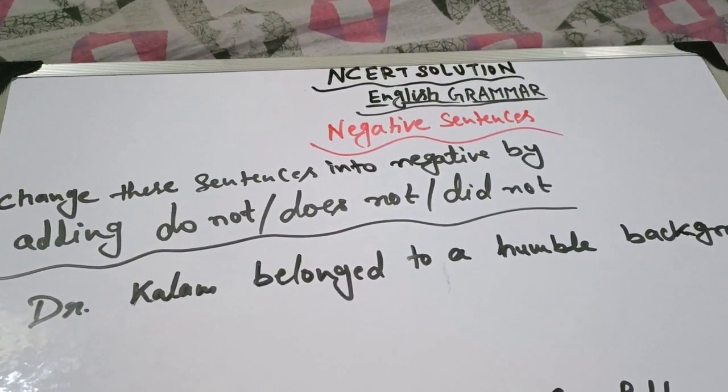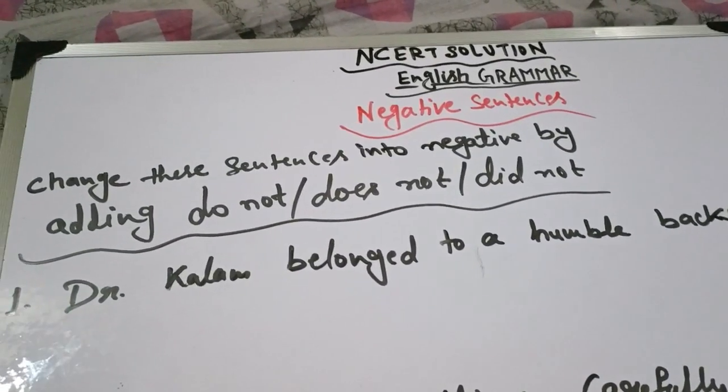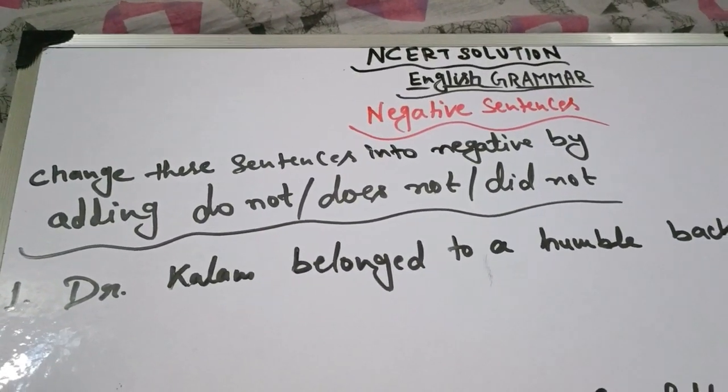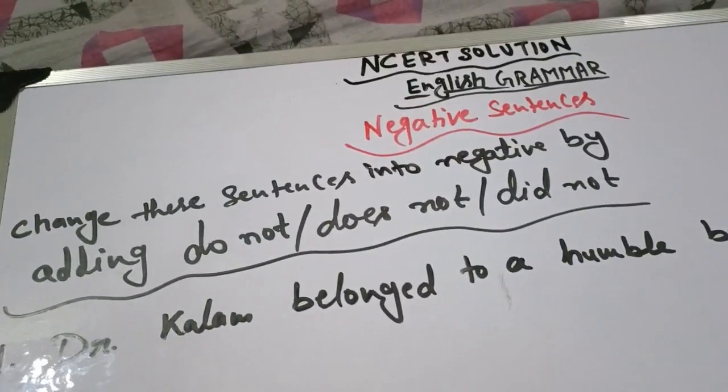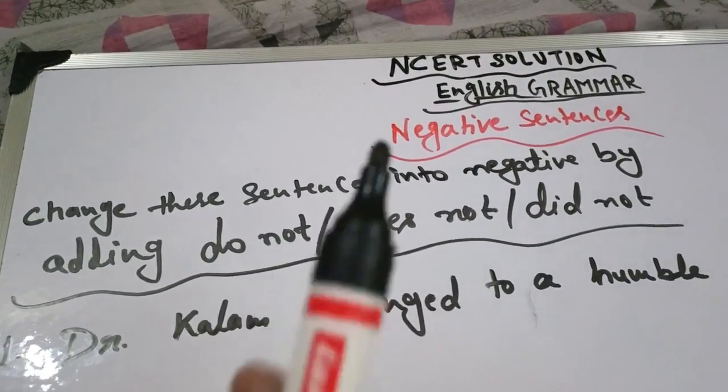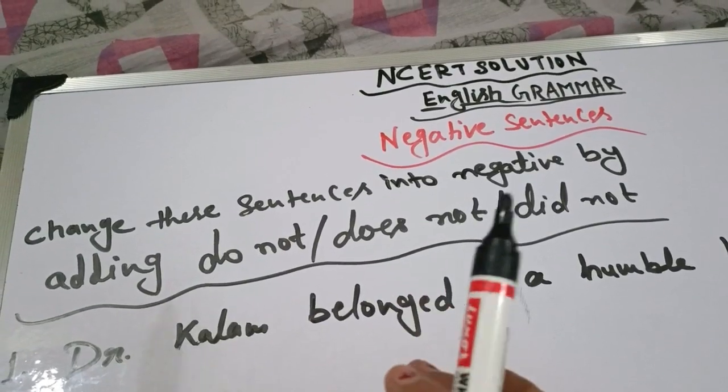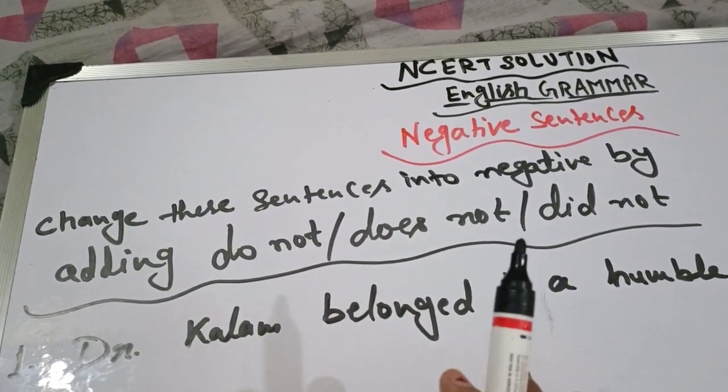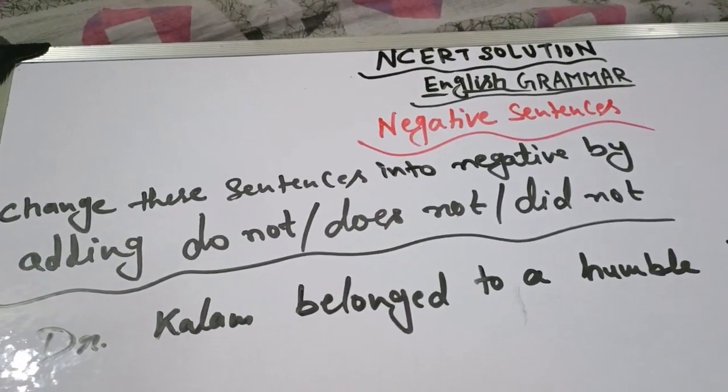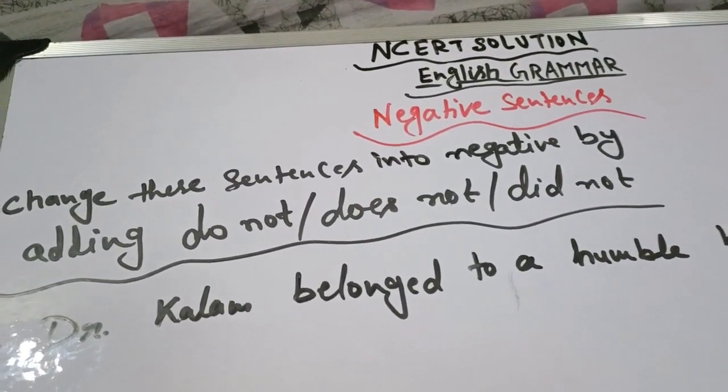We are doing negative sentences in NCERT English Grammar. We have covered negative sentences in simple present and past. Now we are going to change sentences into negative by adding do not, does not, did not.